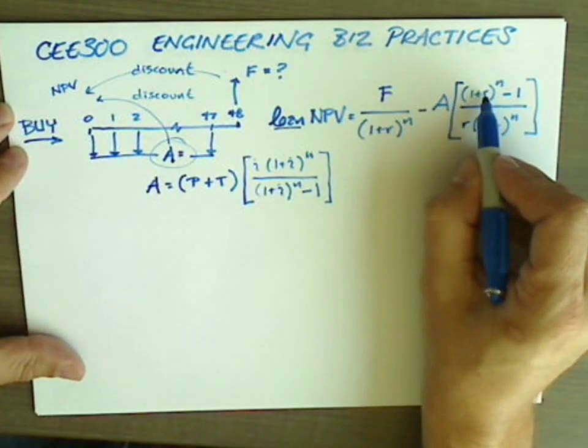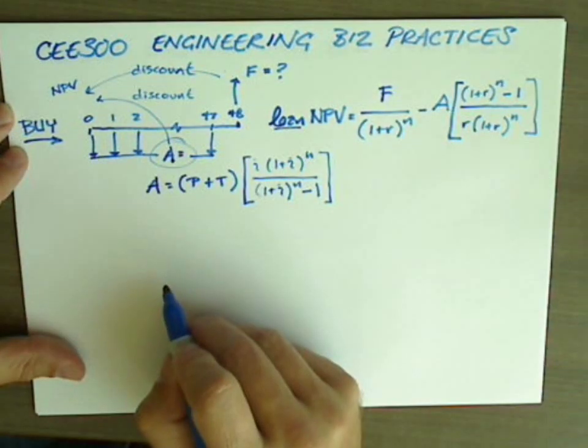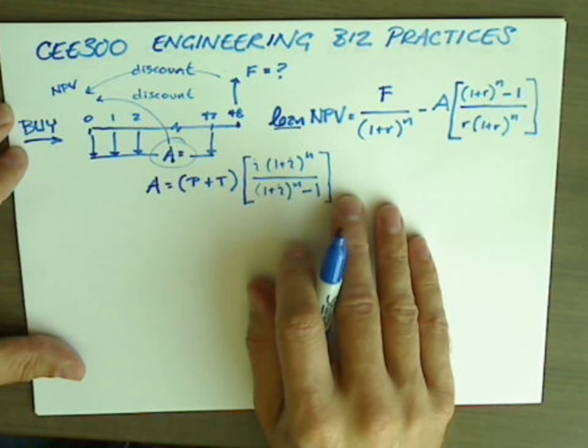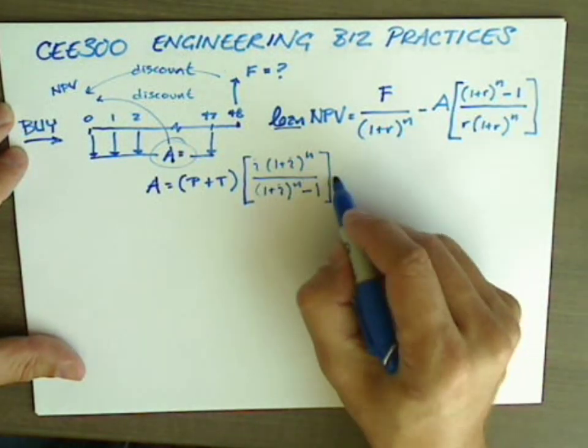And we've had other videos that discuss the difference between these two, R, the discount rate, and I, the interest rate. So we have a good understanding now of what the buy option is.